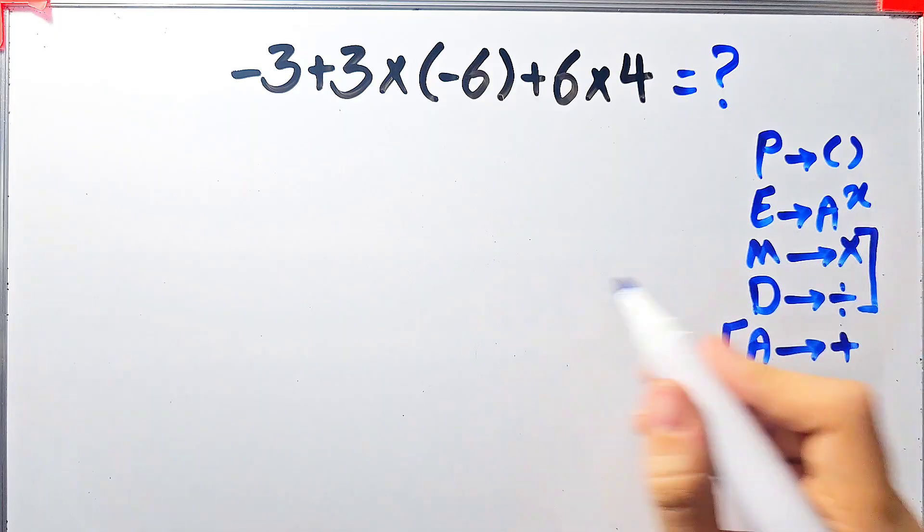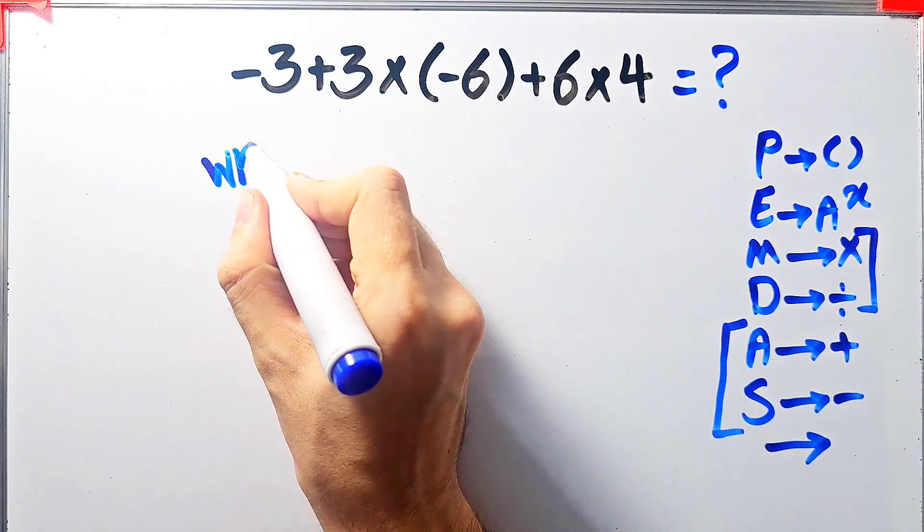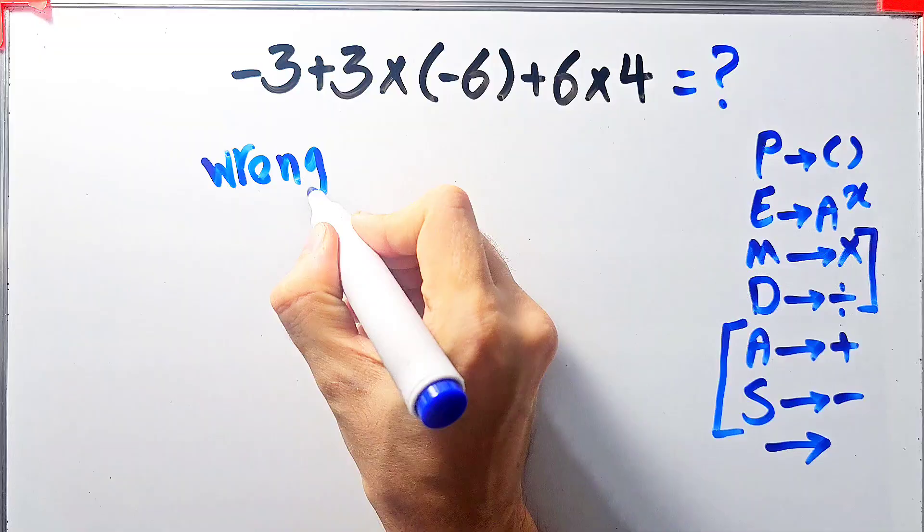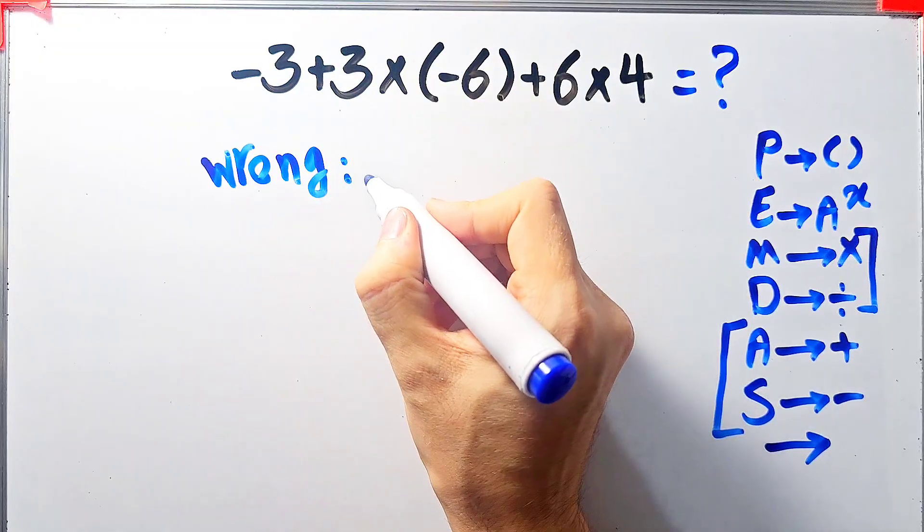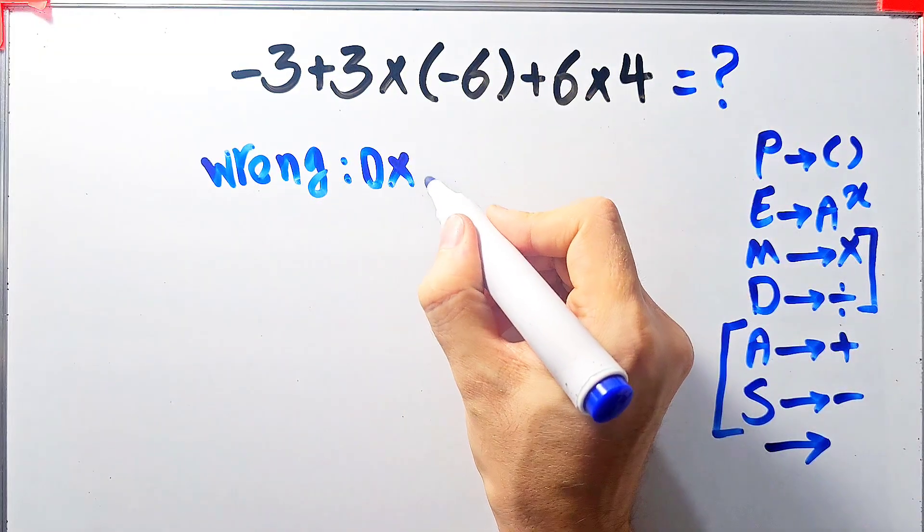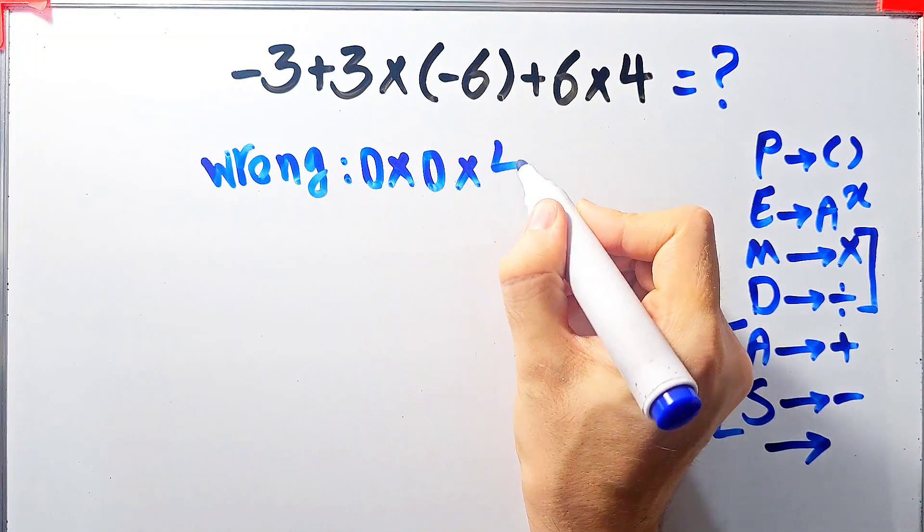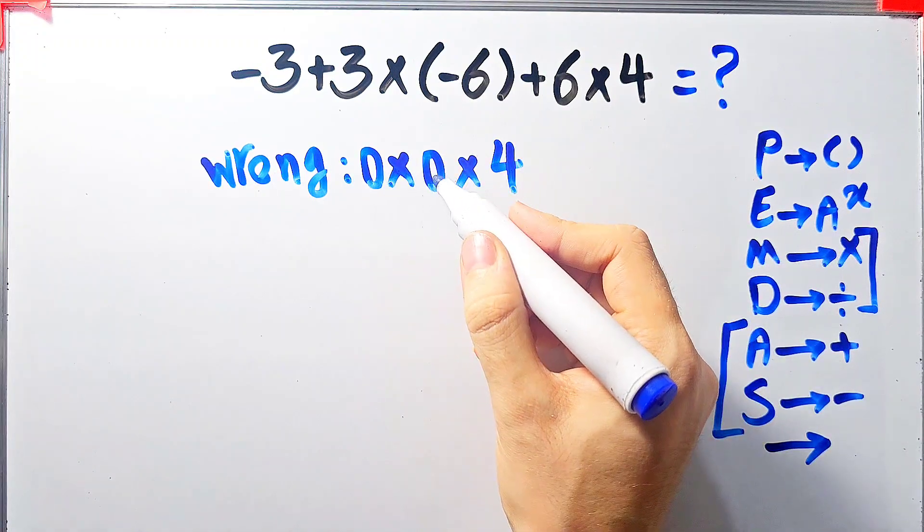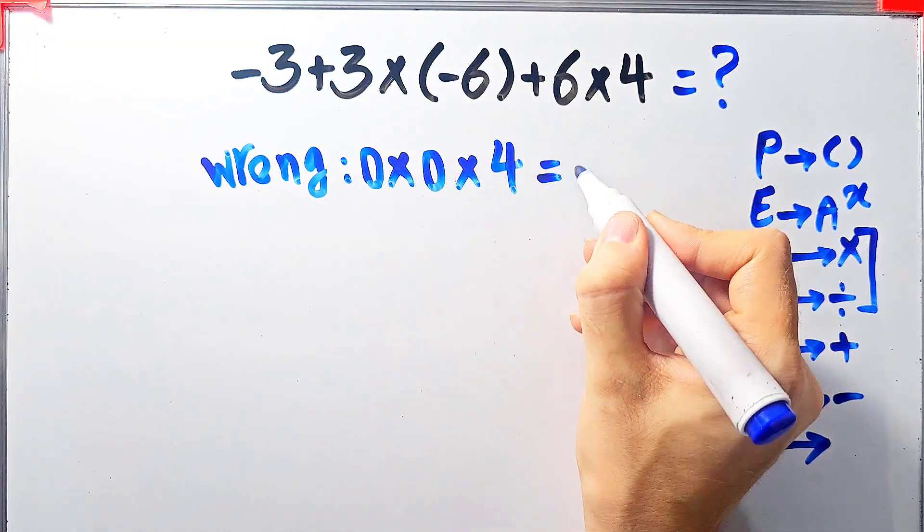If you don't pay attention to this rule you get the wrong answer. Some people solve this question like this: They say negative 3 plus 3 equals 0, 0 times negative 6 plus 6 which equals 0, then times 4. 0 times 0 equals 0, and 0 times 4 equals 0.